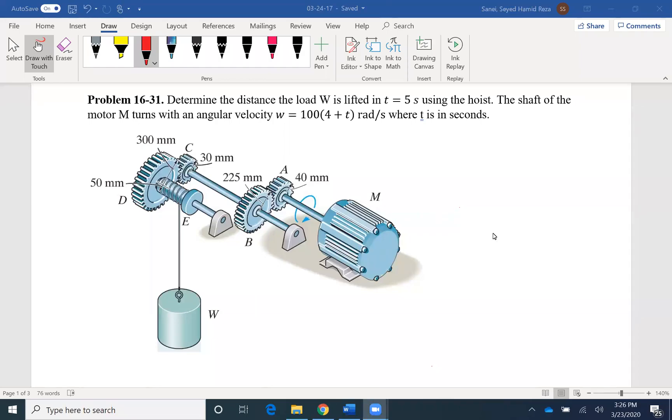Hello everyone. Today we will be solving two problems from kinematics of rigid body. The first problem will be problem 31 of chapter 16 of your textbook. So the problem is asking for the distance that the load W will be traveling in five seconds, if the input would be the angular velocity of 104 plus T. So our motor provides an input and we want to find the output in terms of how far the weight W is traveling.